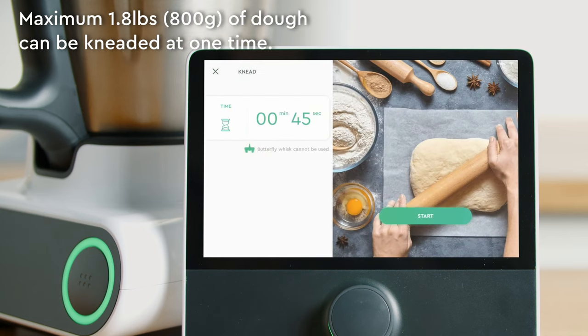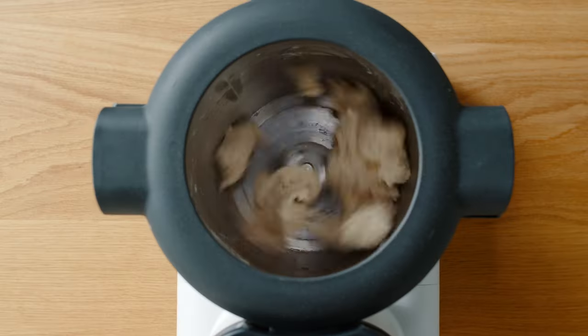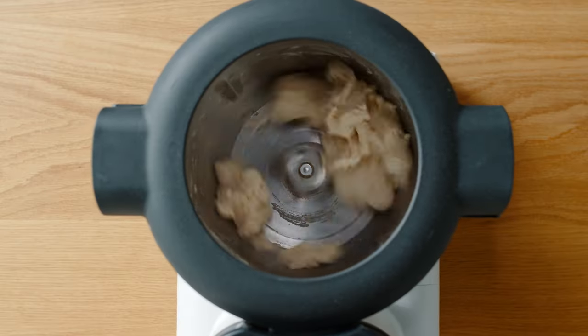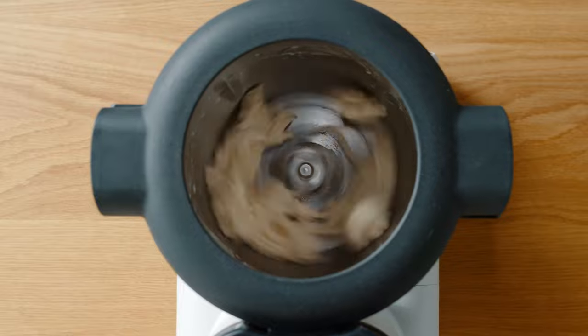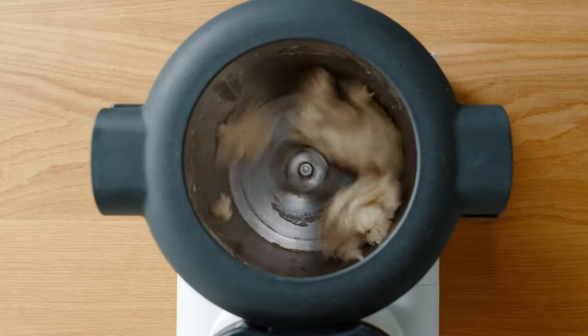With kneading mode Molto can knead your dough in just under two minutes. The blade spins around intermittently and alternates the rotation to stop the dough spinning out of control.